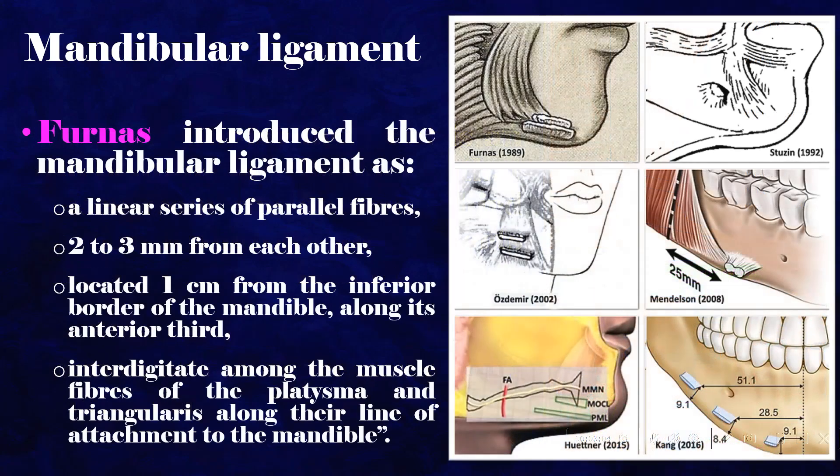Furnace introduced the mandibular ligament as a linear series of parallel fibers, 2 to 3 mm from each other, located 1 cm from the inferior border of the mandible, along its anterior third. They interdigitate among the muscle fibers of the platysma and triangularis along their line of attachment to the mandible.